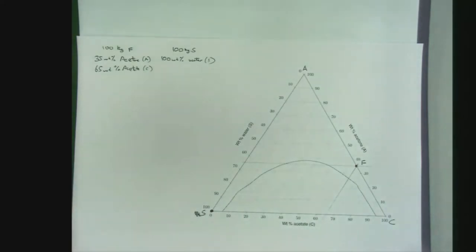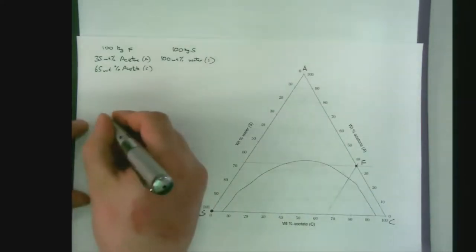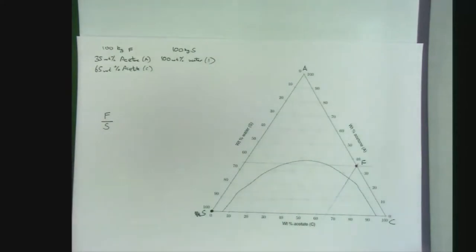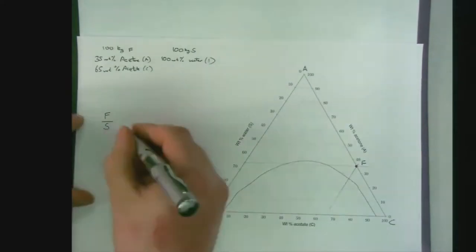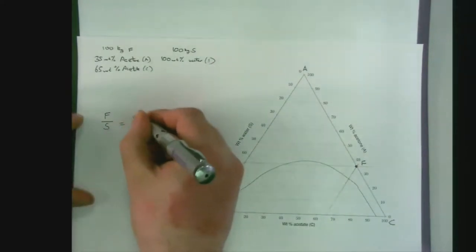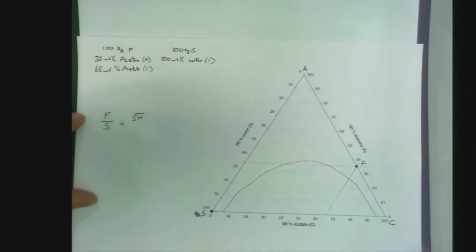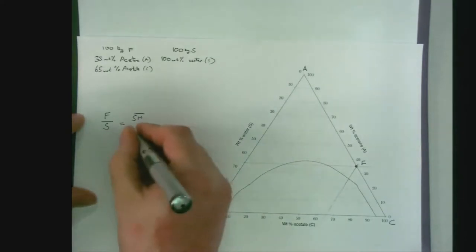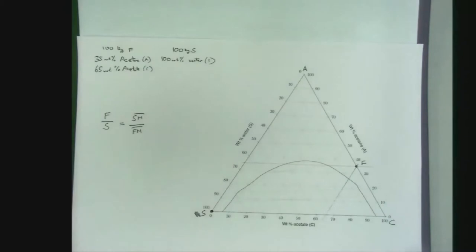Now we can either do a mass balance or use the lever arm rule. One of the lever arm rules states that the ratio of our feed to our solvent flow rates is given by the length of the line from the solvent point to the mixing point divided by the length of the line from the feed point to the mixed point.